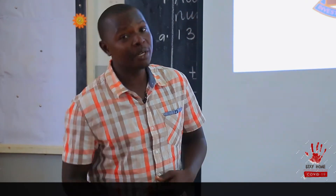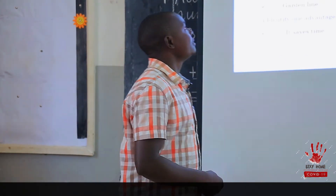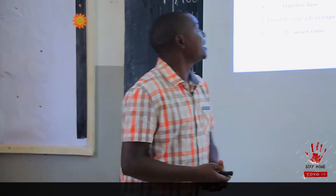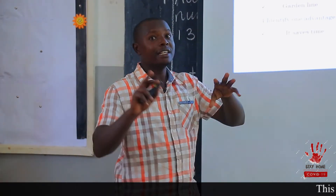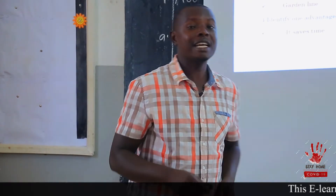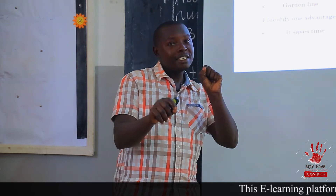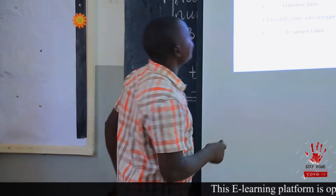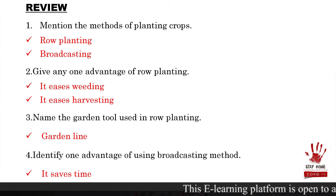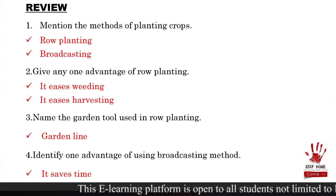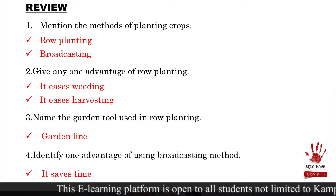Before we do that, what do I expect from you in this lesson today? I left you with an activity that you had answered very well. So check your answers together with mine. And if yours is not matching with mine, you cross it and then you write a correct one. The first activity was: mention the methods of planting crops. We have row planting and broadcasting. Give one advantage of row planting - it eases weeding, it eases harvesting, and many more, the way we discussed last time.